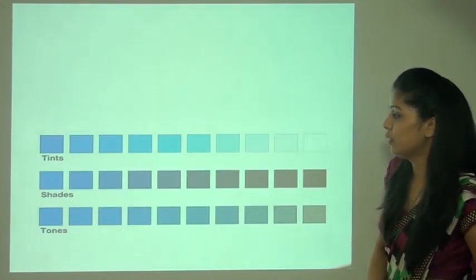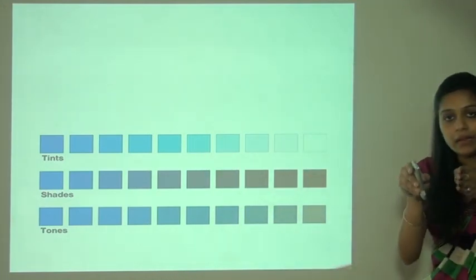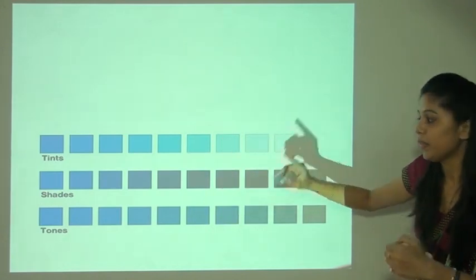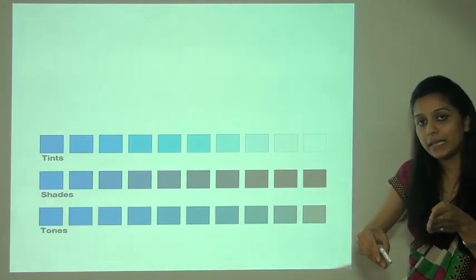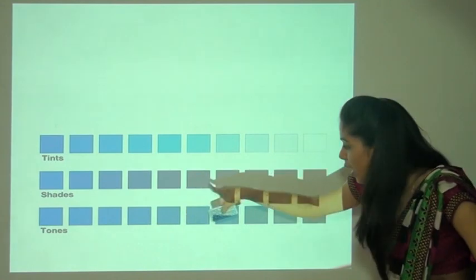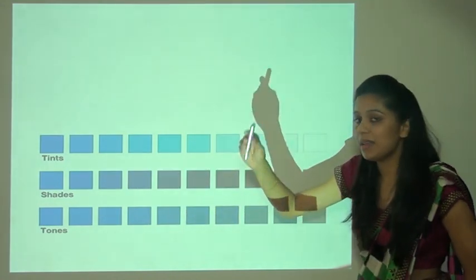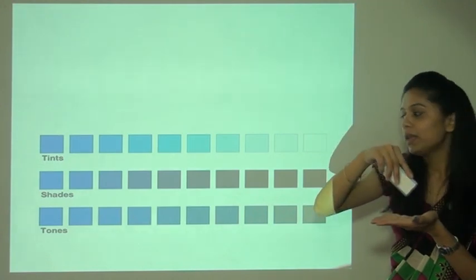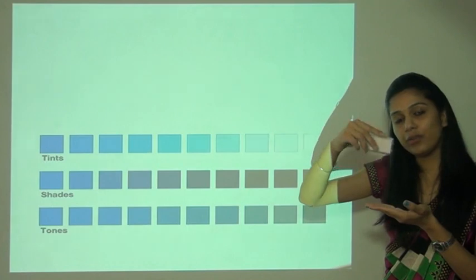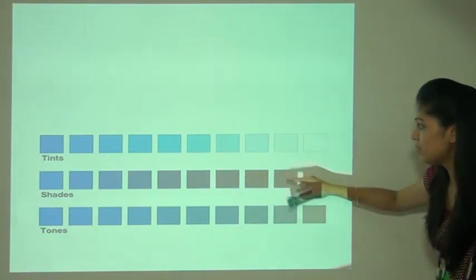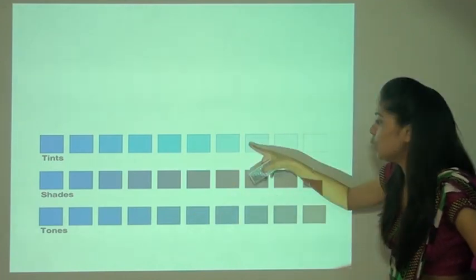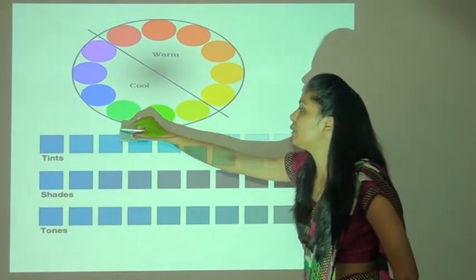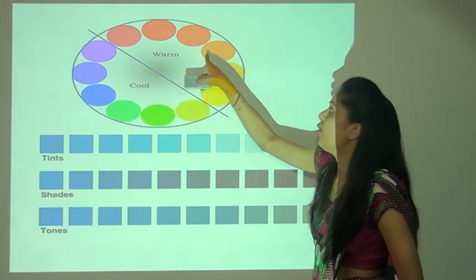Tints — koi bhi basic color liya aur use karke light, lighter, lightest banaate gaye — so these are tints. Shades — ek basic color liya, us mein black add kiya, phir black add kiya, dark hota gaya — so these are shades. Tones — tints and shades ka mixture karke we create tones. Cool colors are mostly blue, white, violet, green — mostly used in summer. Warm colors are red, orange, yellow.